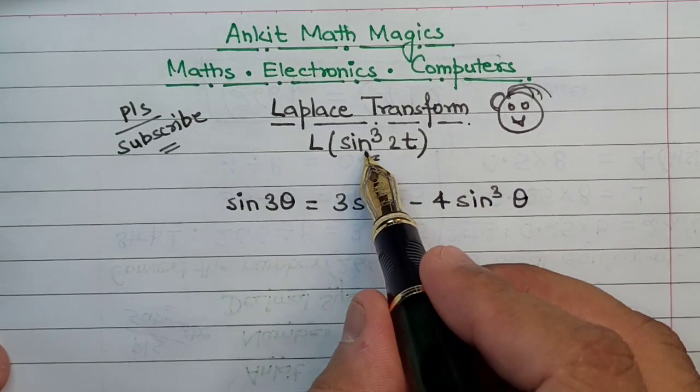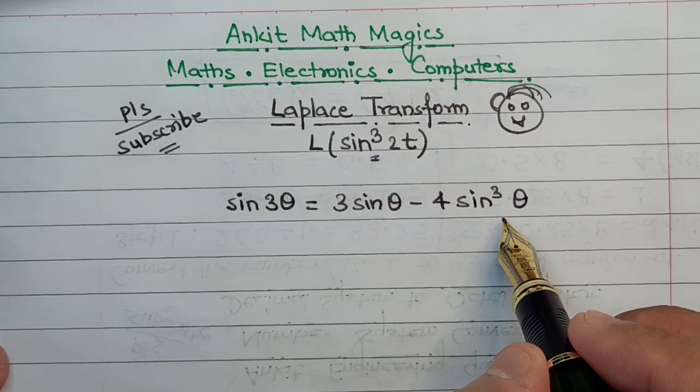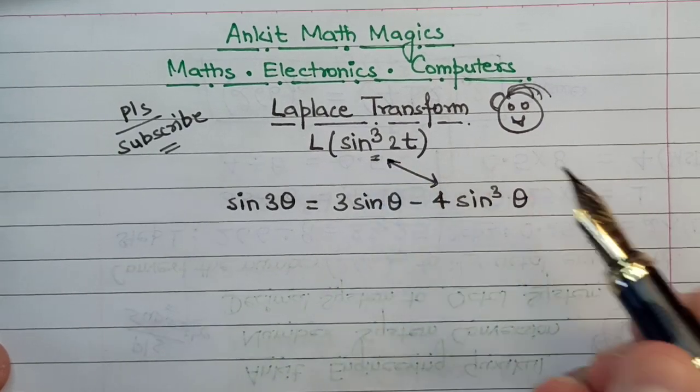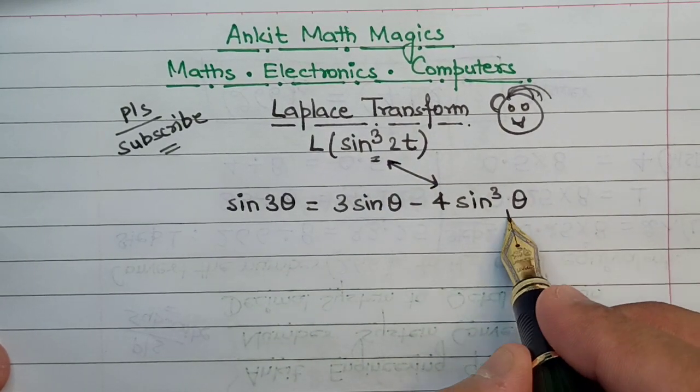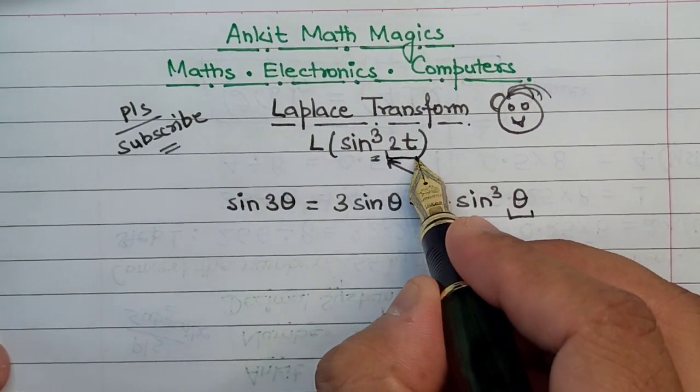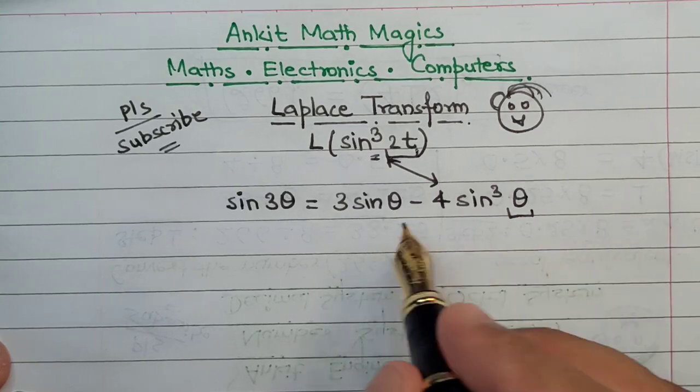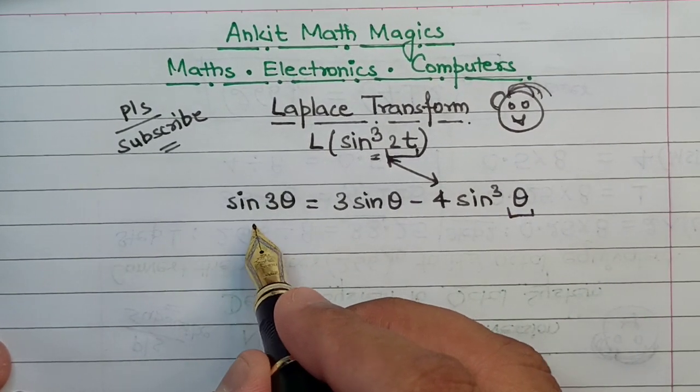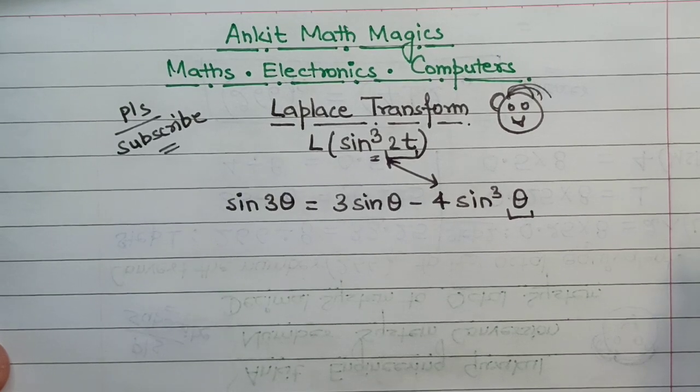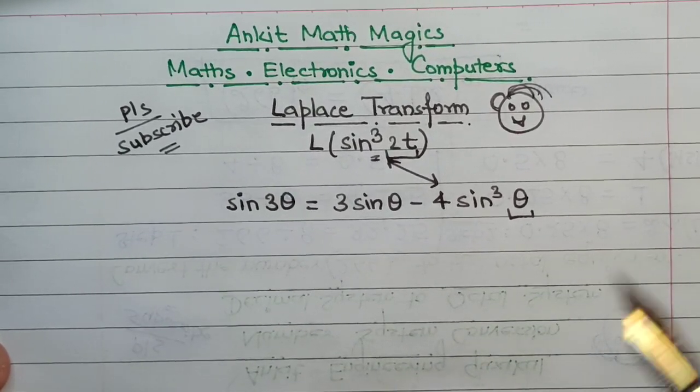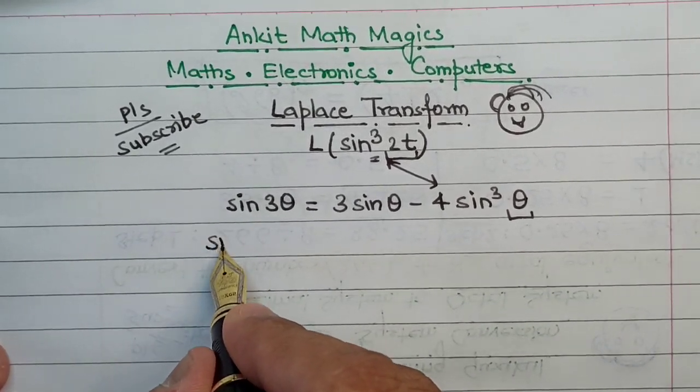Now if I compare this sine cube theta to this particular sine cube here, the only difference that can be seen is that in place of theta I have to substitute this value as 2t. This entire expression will turn into terms of 2t, so that means in place of theta let us replace the theta by 2t.